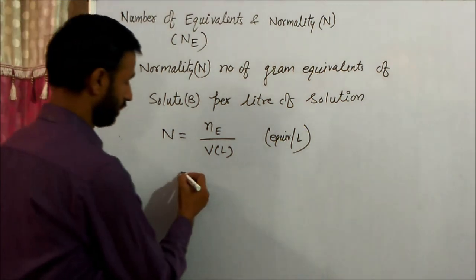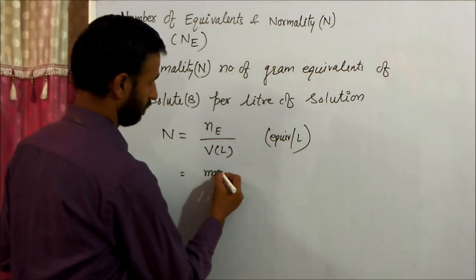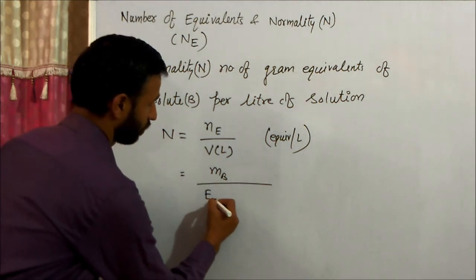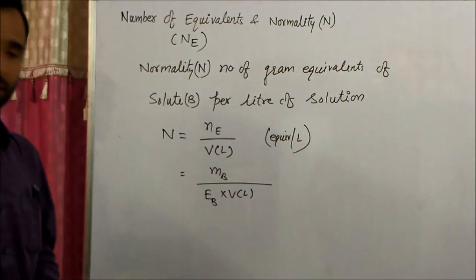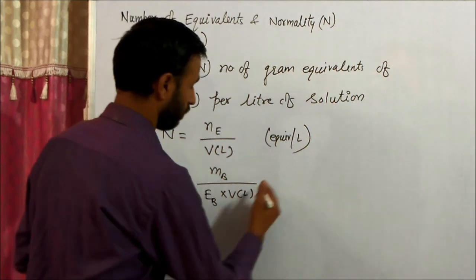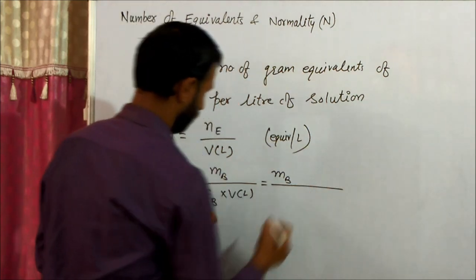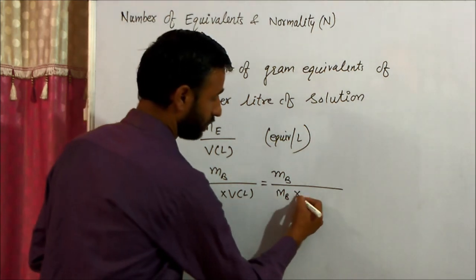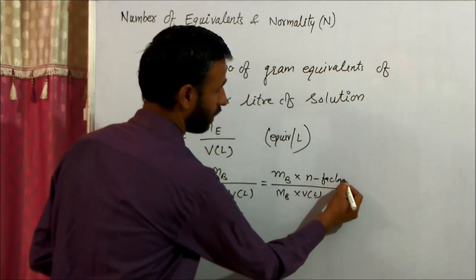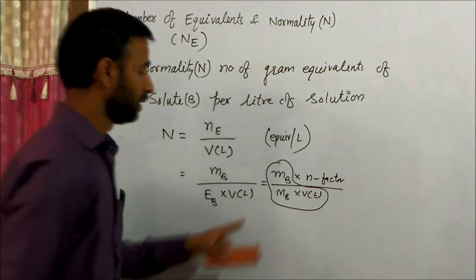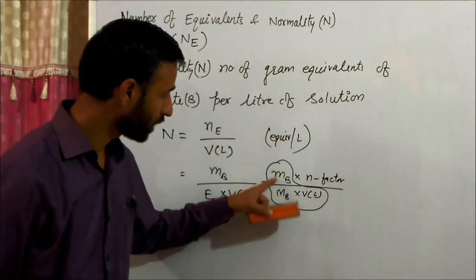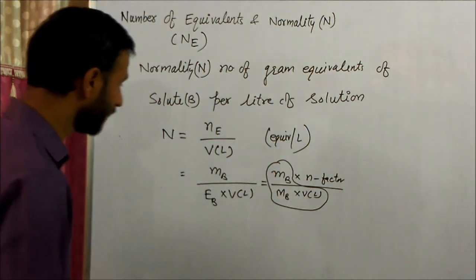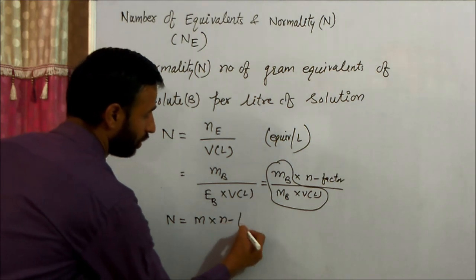Number of equivalents equals mass of solute B (MB) divided by equivalent mass of B, into volume of solution in litres. Equivalent mass is molar mass of B divided by N factor, so it is into N factor. Mass over molar mass per litre of solution is molarity. So normality is equal to molarity into N factor.